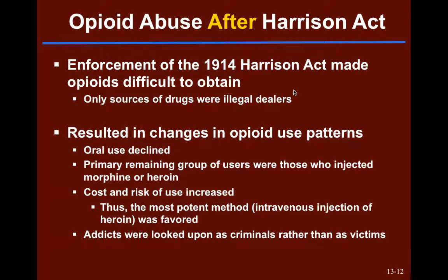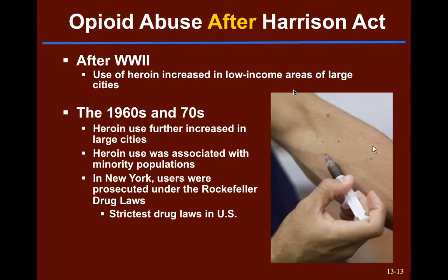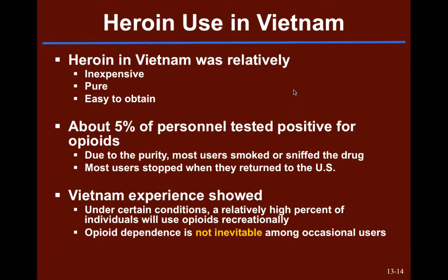After World War II, we saw heroin use increase in low-income areas of large cities. Then in the 60s and 70s, there was another continuing increase — still not as high as the beginning of the 20th century — but again, this use was associated with minority populations. In New York at the time, the Rockefeller drug laws were enacted, which were the strictest drug laws in the United States. But we also saw a trend in heroin use associated with military service.